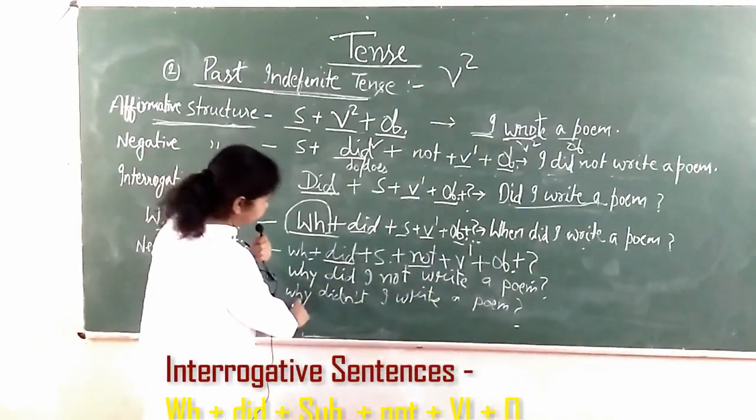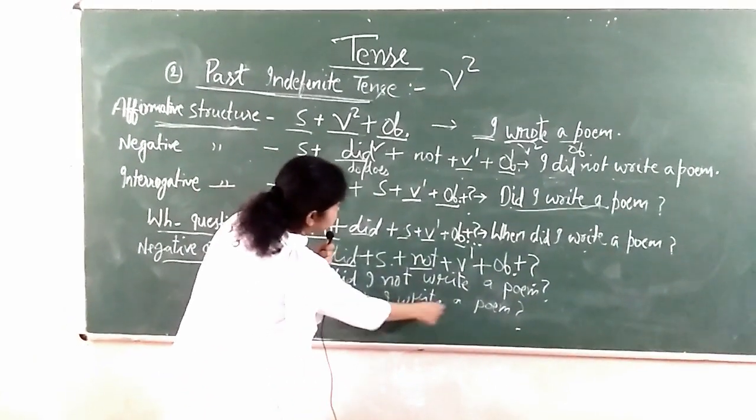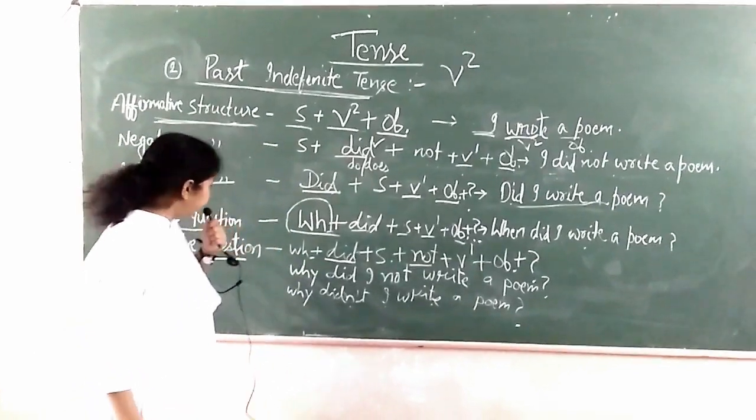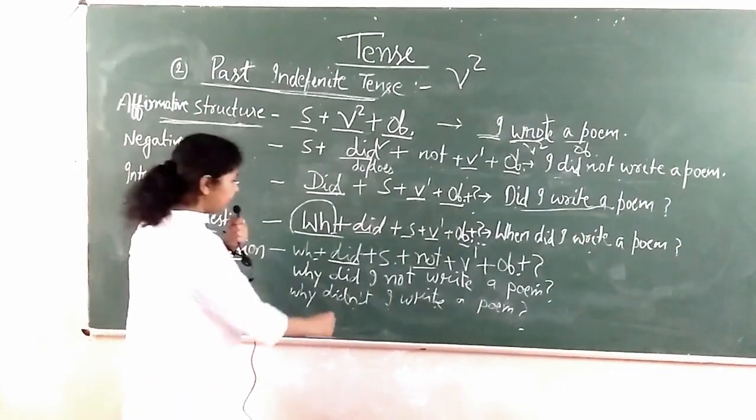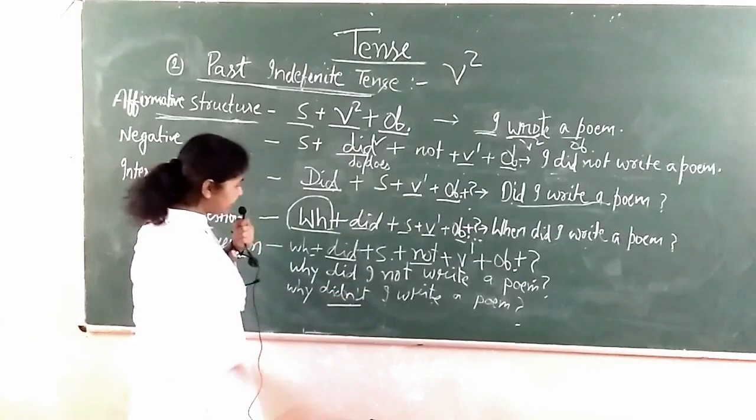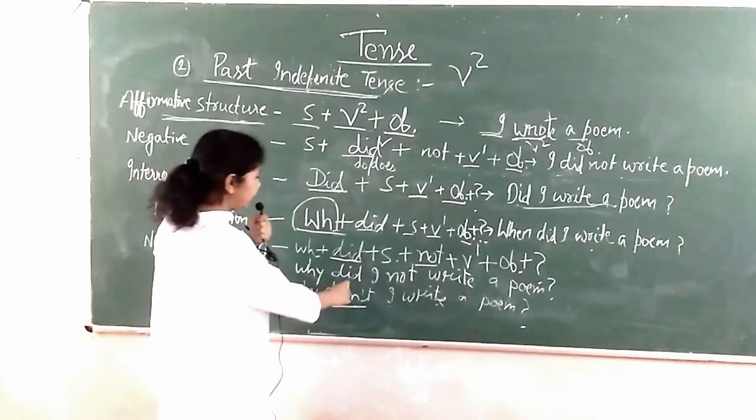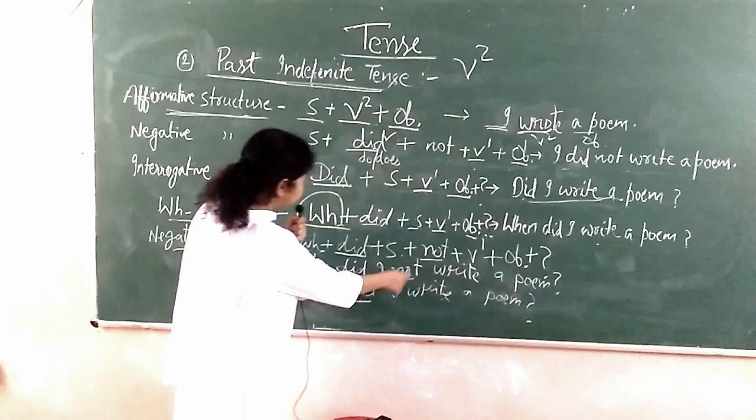Or, how did I write the poem? The subject with did not combined, or subject with did not separately. But very simple structure is subject + V2 + object.